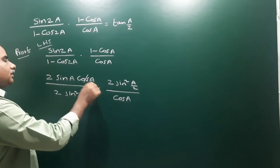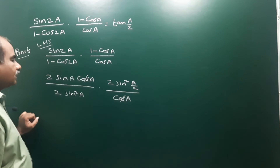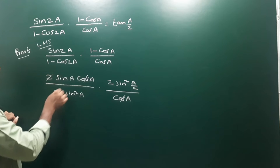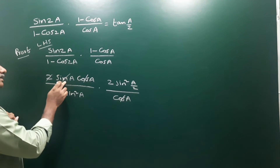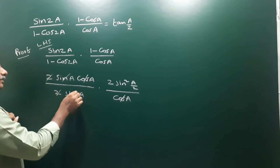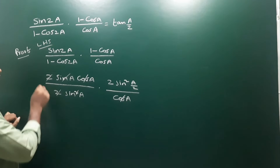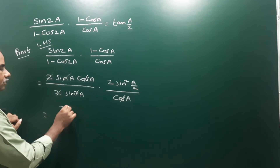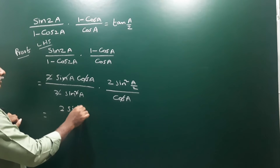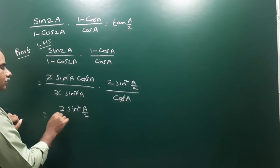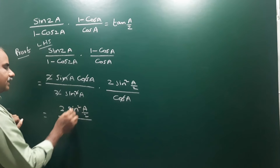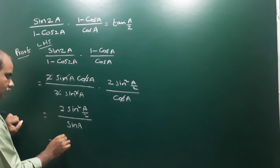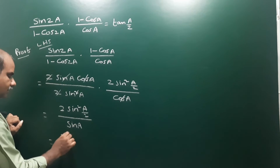Now cancel the like terms in the numerator and denominator. cos a and cos a cancel. The 2 and 2 cancel. One sin a here and one sin a there — cancel the power. Now we have the remaining expression: 2 sin²(a/2) divided by sin a.